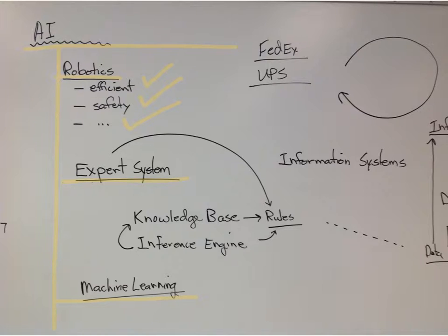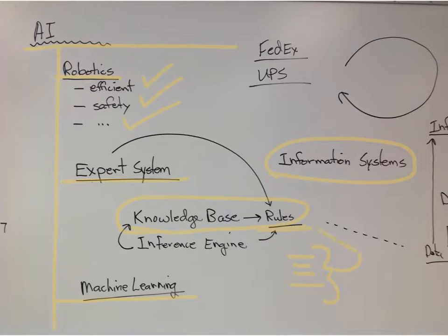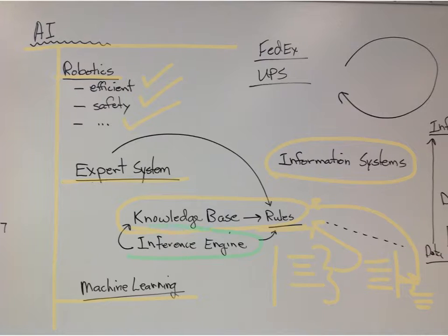We talked about expert systems. Expert systems have a knowledge base, while information systems have a database — we're going to compare those on the next slide. A knowledge base is a set of rules. Like if you go to a doctor, the doctor asks you some questions, and based on those answers it takes him to a set of rules that allows him to ask another group of questions, then another set of rules. An inference engine is software that allows us to work our way through a knowledge base, and the rules in the knowledge base tell us what to do next.